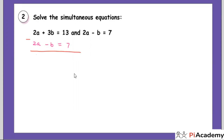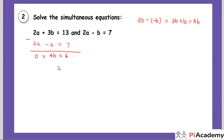2a minus 2a is 0. Then 3b minus minus b: minus minus b becomes plus b, so 3b plus b equals 4b. And 13 minus 7 is 6. So 4b equals 6, meaning b equals 6 divided by 4, which is 3 over 2, or 1.5 as a decimal. Decimal answers are possible — nothing to worry about.